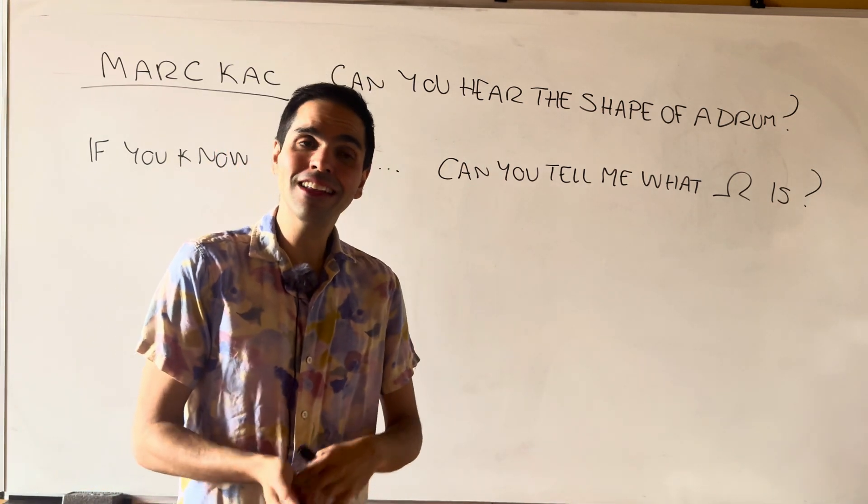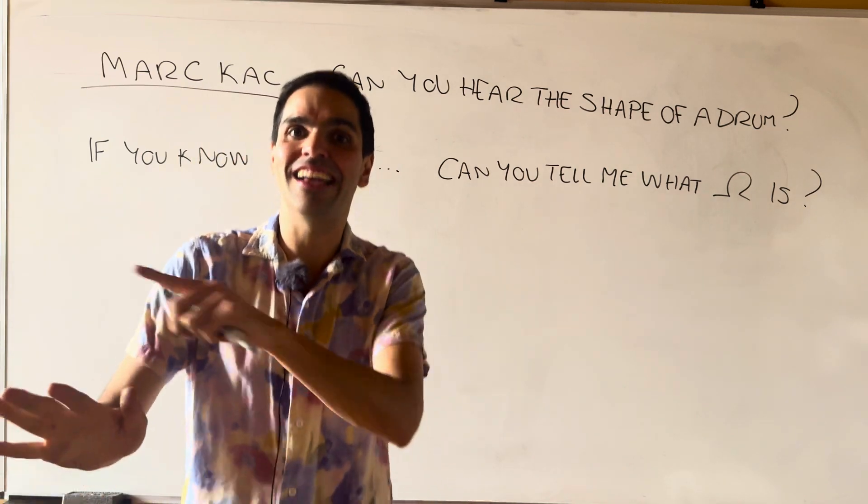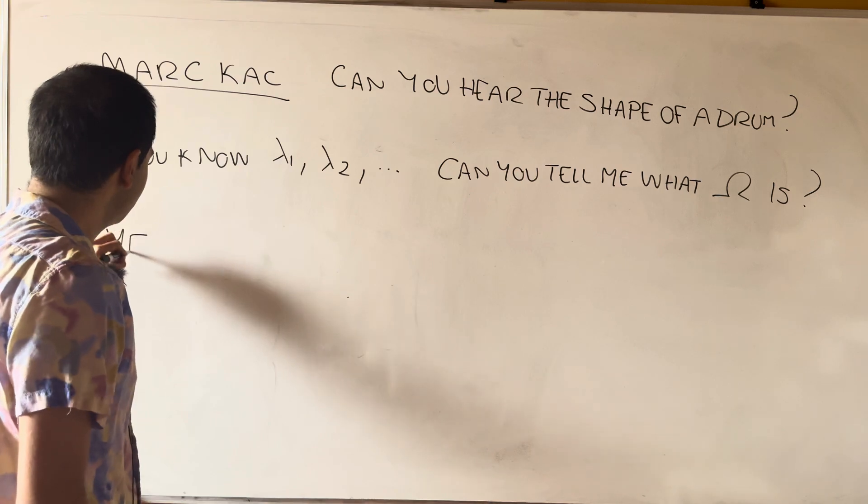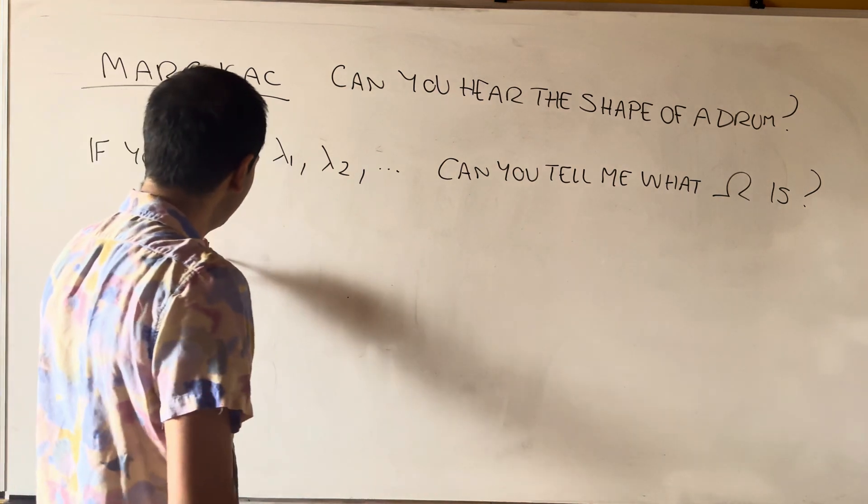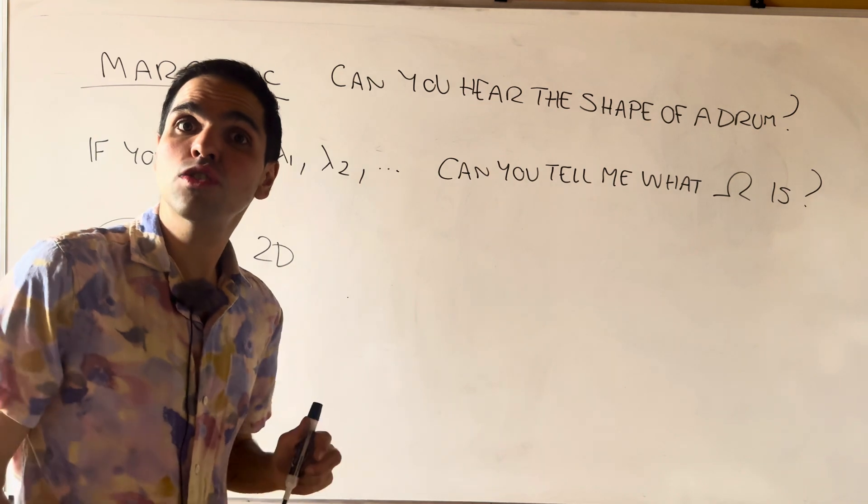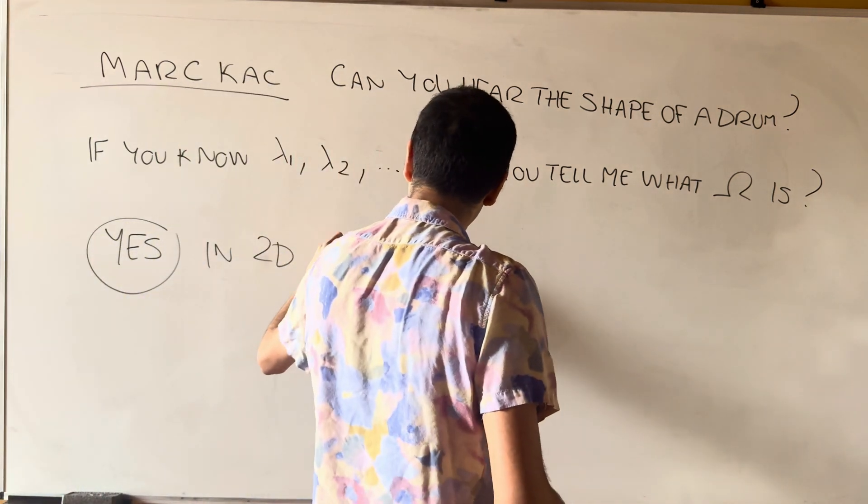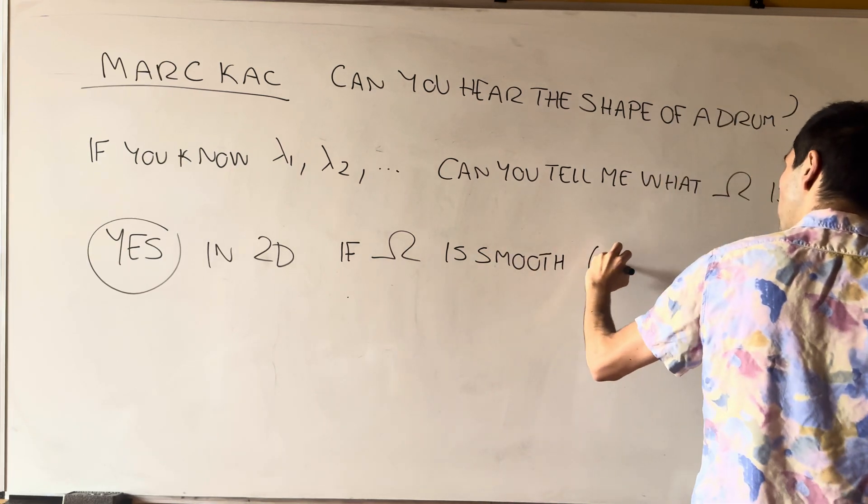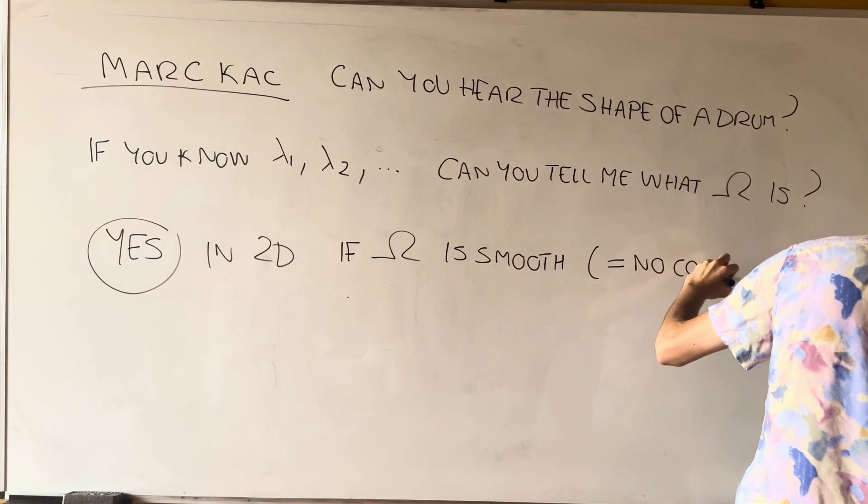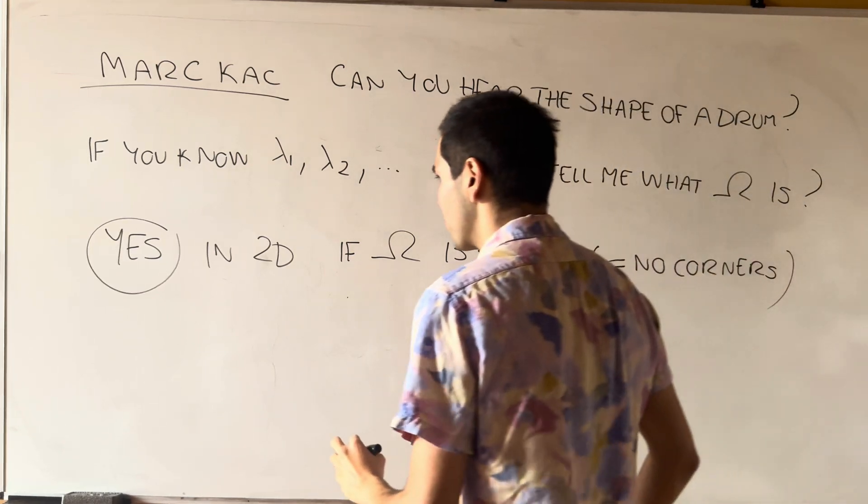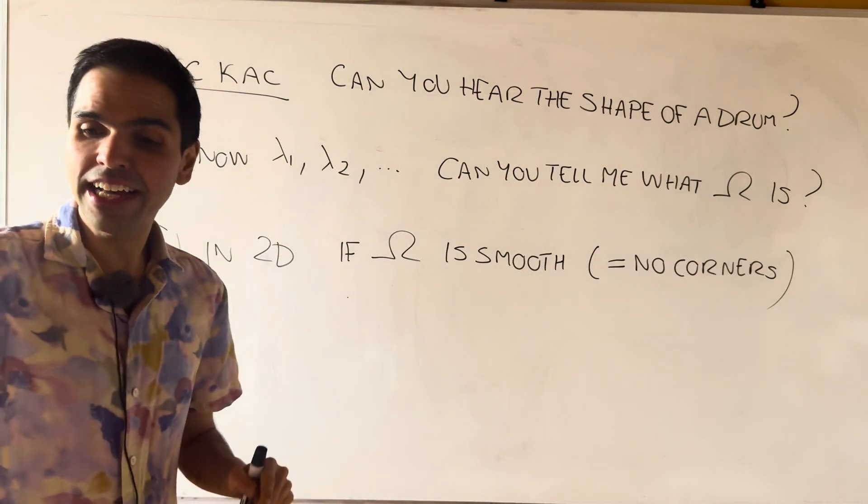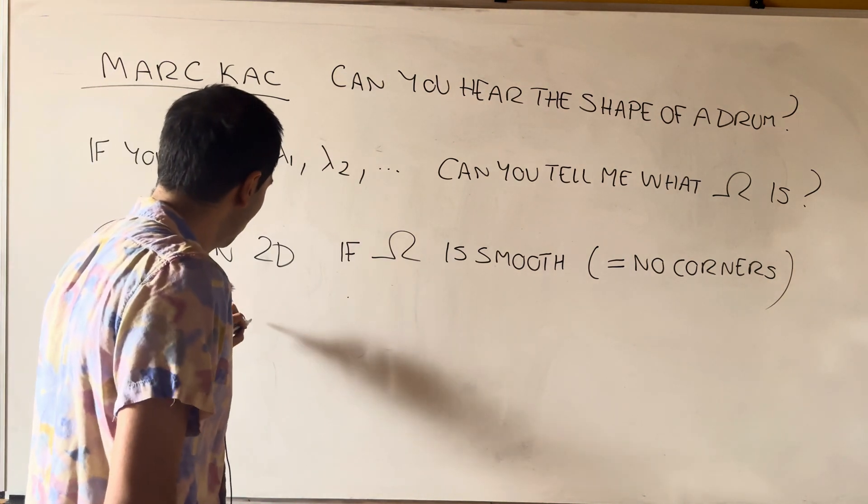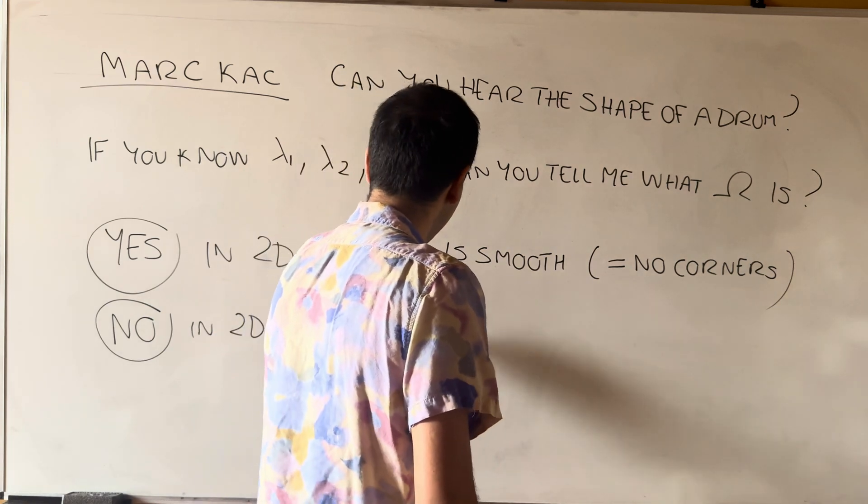Now it turns out the answer to this question is it depends because the answer is yes in 2D if the instrument is smooth. So if omega is smooth, smooth meaning no corners. If it has corners, the answer is no in 2D if omega has corners.